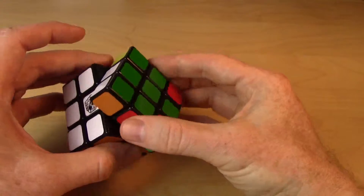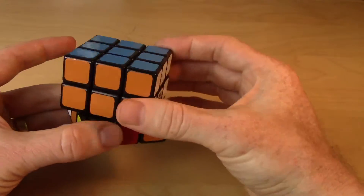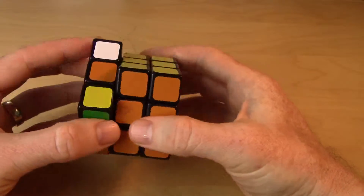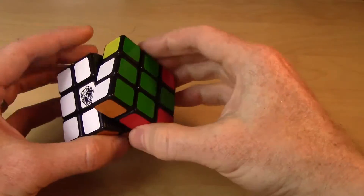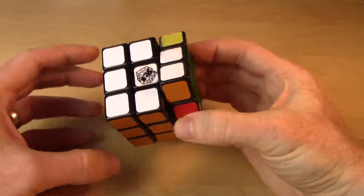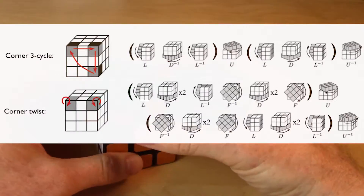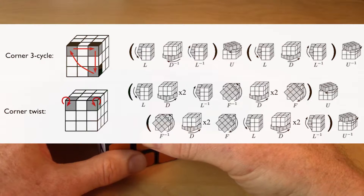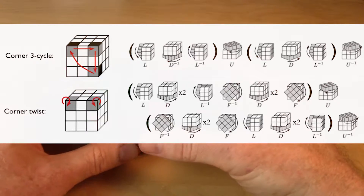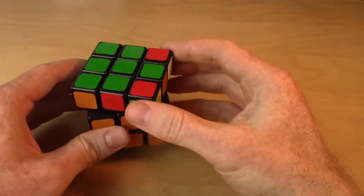So how do we do this? The trick is we want to solve those corner pieces without messing up all our hard work on solving the first two layers. So we're going to come up with some special move sequences that move these pieces around without affecting everything else. If you look at the move sequences listed on this page, you'll see there are two: one called the corner three cycle and another called the corner twist. Those are the two move sequences we're going to be using again and again on solving the corners in this last layer.